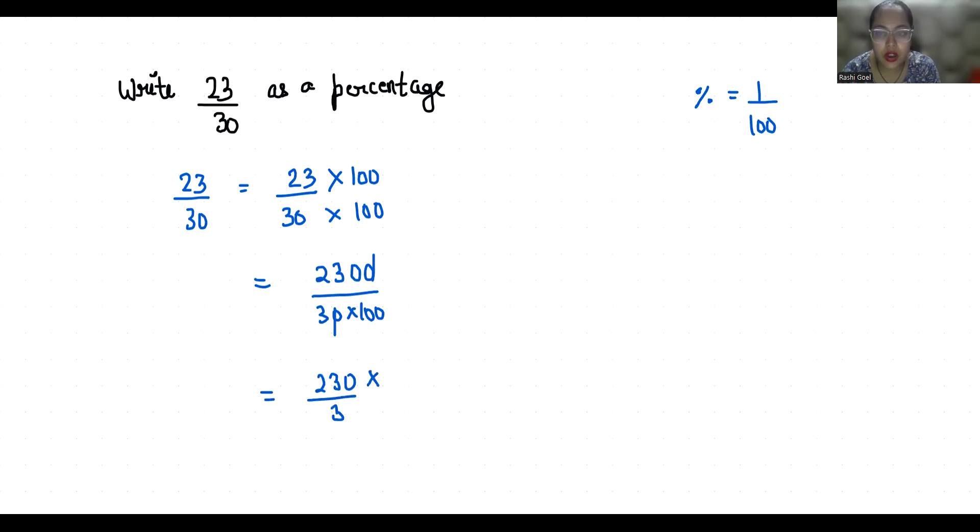Now we are going to divide 230 by 3. 3 times 7 is 21. Then subtract it. 3 times 2. If you put decimal 0, then 3 times 6 is 18. Again 2. 6 is 18. So it will repeat again and again.